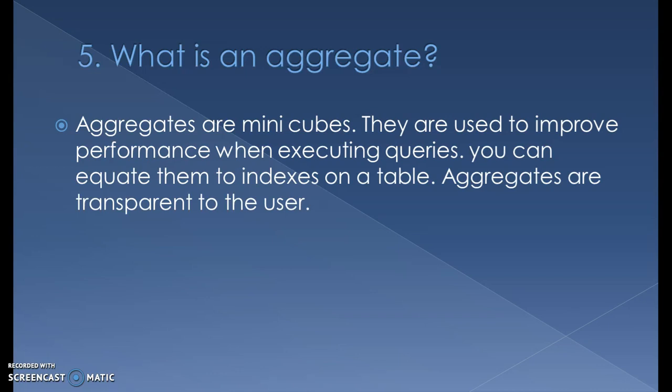Can we restrict key figures in aggregates? No. There are only two ways to aggregate or restrict data in an aggregate: we can reduce the number of characteristics (e.g., from 50 down to 20), but we cannot reduce key figures — all key figures come into the aggregate by default. We can also reduce the data by time, for example taking only the last one month or one year of data, but we cannot restrict based on a specific field value.